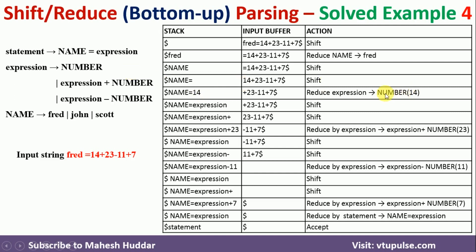This number 14 can be reduced to expression using the rule expression → number. So we get name equals expression on the stack. This matches the statement rule, but we still have input remaining, so we cannot reduce to statement yet. We shift the next token, which is plus.